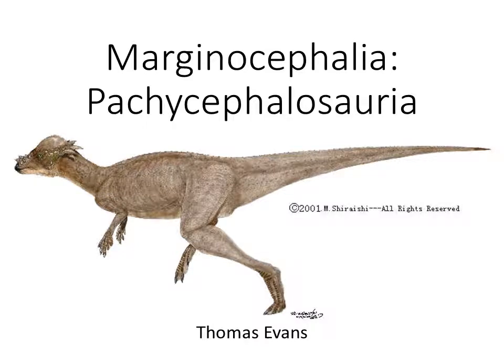We're going to talk about the Marginocephalia today — those are the sort of head shield animals. This is a group that I'm sure you guys know about — the Pachycephalosaurs. We're not going to include them in this lecture, but we will include in the future the Ceratopsians, which are our frilled dinosaurs, which are some of the more classic examples of dinosaurs.